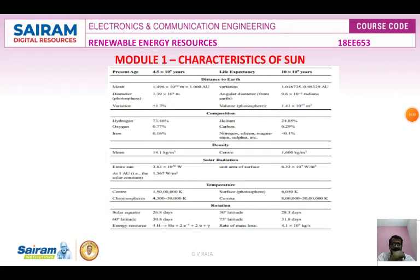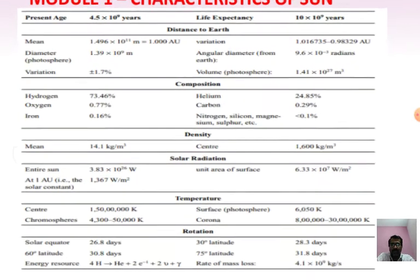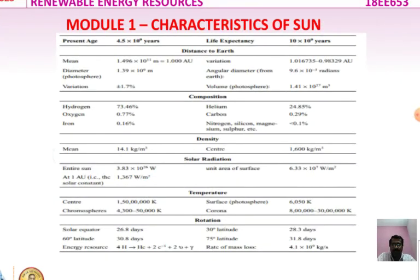The characteristics of the sun — including various parameters such as distance to the Earth, composition, density, solar radiation, temperature, and rotation — are all shown in the summary table here.